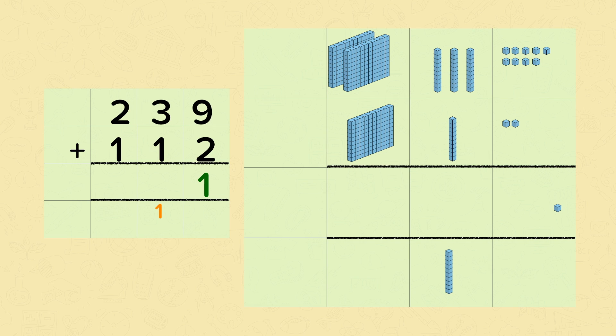Now let's add the tens. So we've got three add one, but we've also got another one that we've exchanged over from the ones. So three add one, add one, is five.